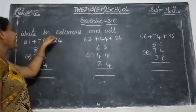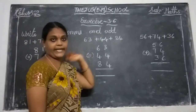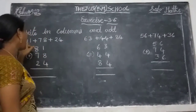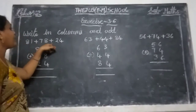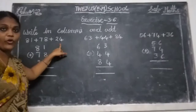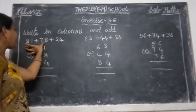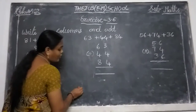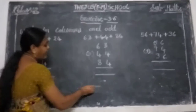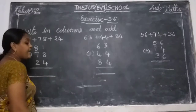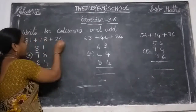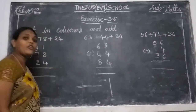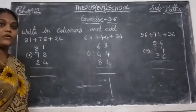See here — write in columns and add. The sum is 81 plus 78 plus 24. Given numbers in horizontal form, that means already explained as the sleeping line. Those sleeping line numbers we will write in standing line — that is called column line.